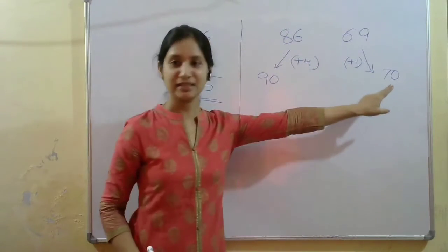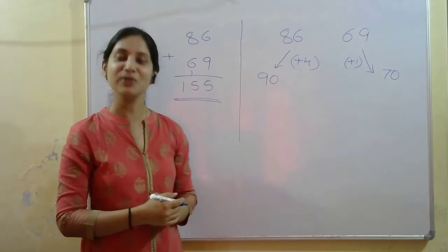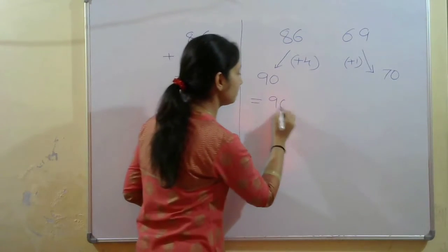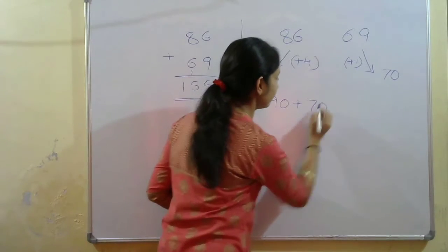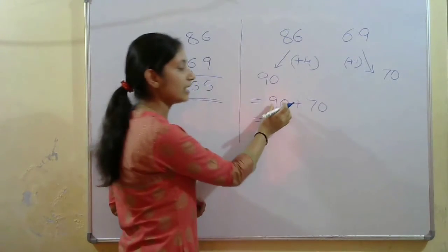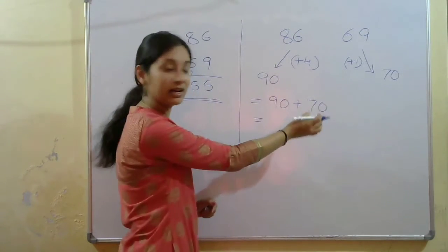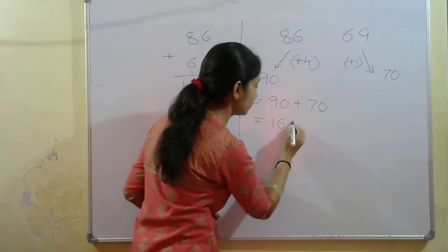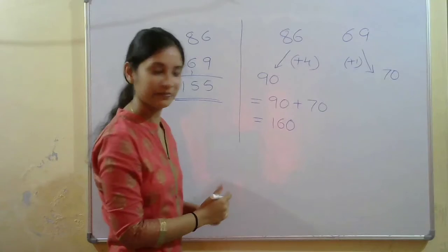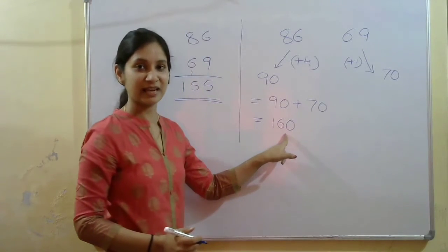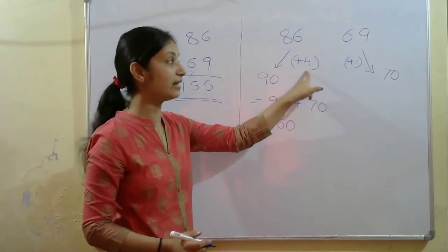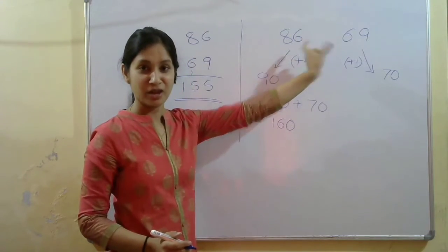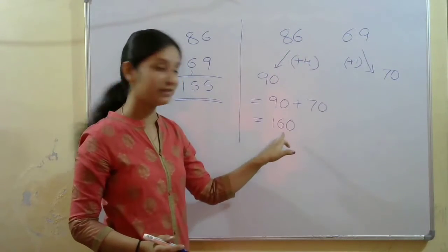Now you have 90 and 70, and it is very easy to add multiples of 10. 90 plus 10 is 100, plus 60 is 160. So 90 plus 70 equals 160. But 160 is not our exact answer, because we added 4 and 1 to the original numbers, and we need to subtract those from our result.